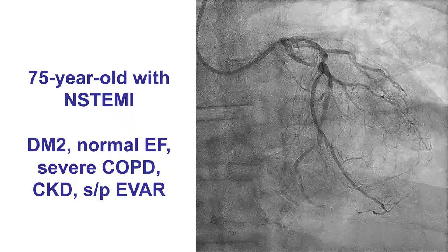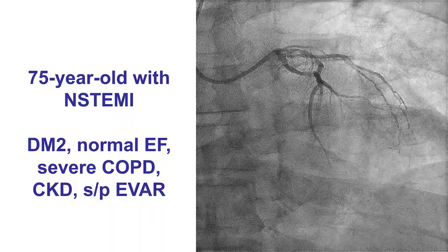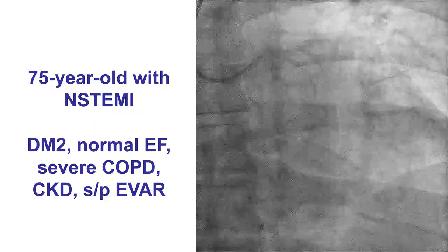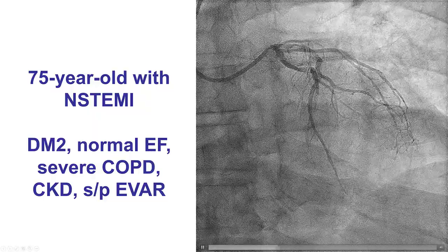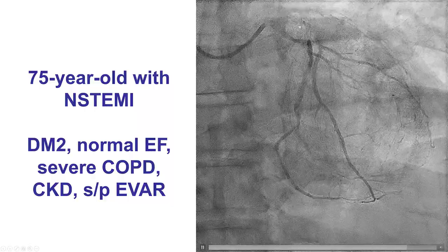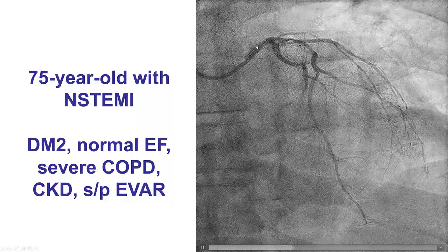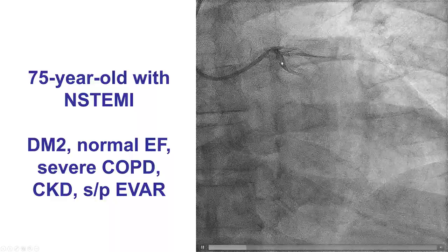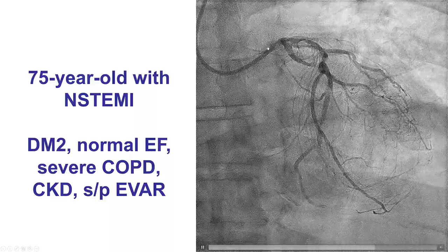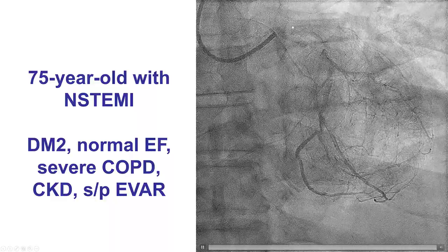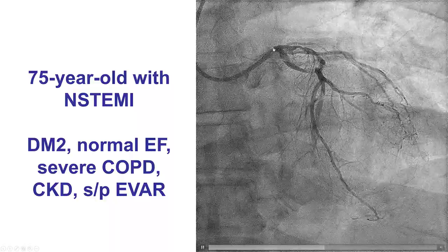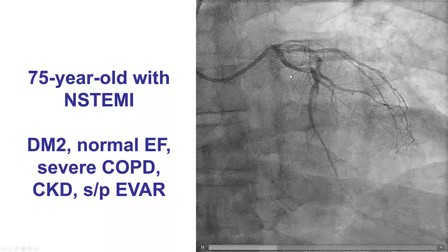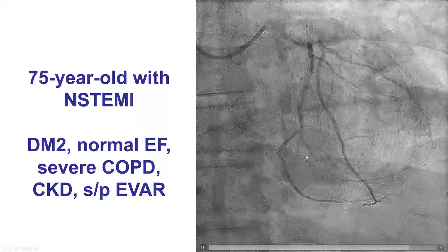The patient was an elderly gentleman who presented with non-ST elevation myocardial infarction. He did have multiple comorbidities and was fairly large, which explains in part the poor angiographic image quality. He was found to have significant disease in the left main as well as the proximal LAD and the proximal and mid-circumflex. He had a left dominant circulation.